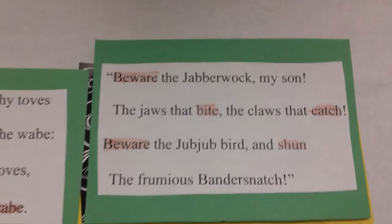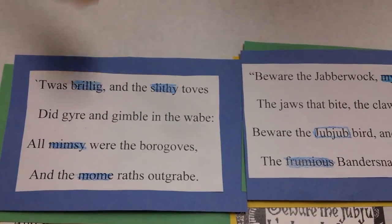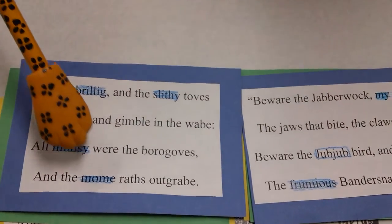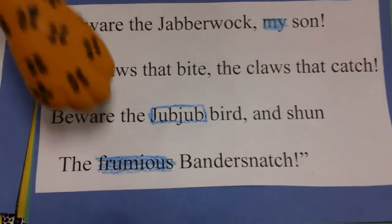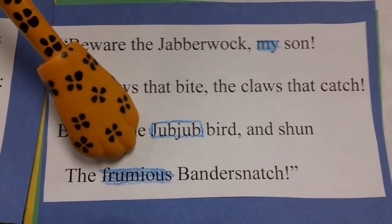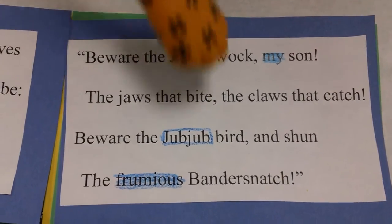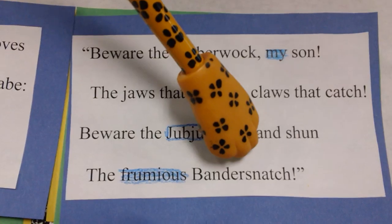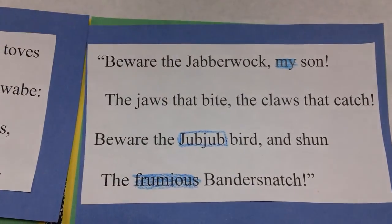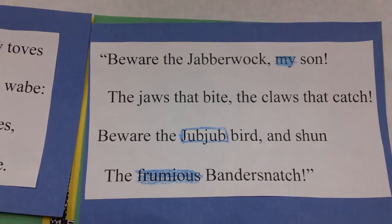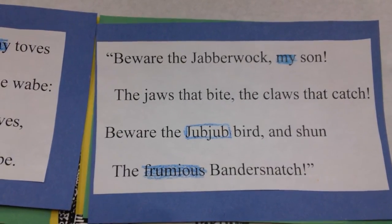Now let's look for adjectives and other modifiers. Modifiers are words that describe or modify nouns. Look at the line, the frumious Bandersnatch. How do we know frumious is an adjective? First, we see the noun identifier the, which tells us there is a noun around. The noun in this line is Bandersnatch. We know this because of the identifier, but also because it is capitalized — this means it is a proper noun. Now back to the word frumious. Frumious is describing or modifying Bandersnatch. Therefore, we know it is an adjective.